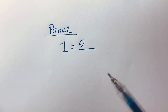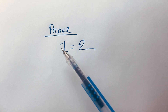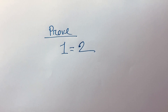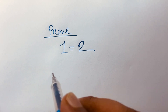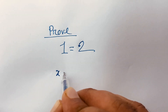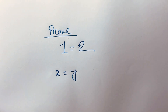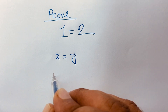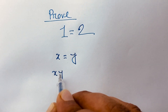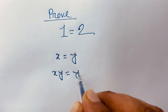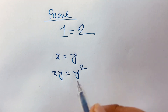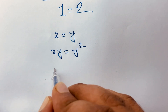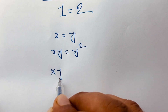Hello everyone, it's just for fun — can we prove 1 is equal to 2? Let's start. First of all, let x equal y. Then I multiply both sides by y, so it will be x·y equals y squared. Then I subtract x squared from both sides.